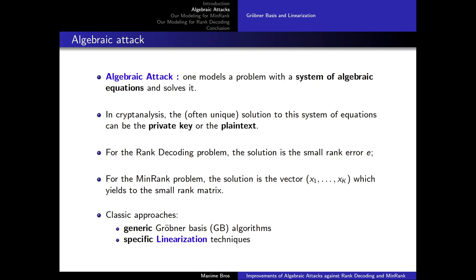Our attack is an algebraic attack. An algebraic attack means that one models a problem with a system of algebraic equations and tries to solve it. In cryptanalysis, the often unique solution to this system can be the private key or the plaintext. In our case, it is related to the plaintext and it is easy to recover the plaintext from it. For the rank decoding problem, the solution will be the error of small rank E, and for the min rank problem, the solution is the vector x_1 up to x_K which yields the small rank matrix. To solve this system, there are two classic approaches: generic Gröbner basis algorithms such as F4 or F5, and specific linearization techniques — and that's what we're going to use.